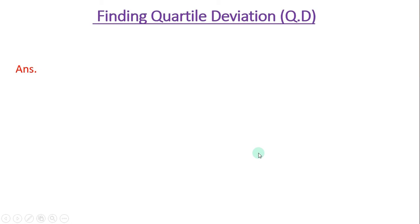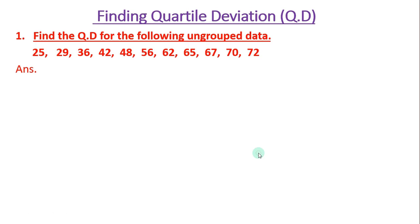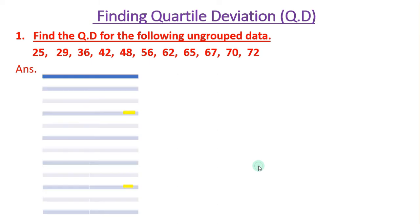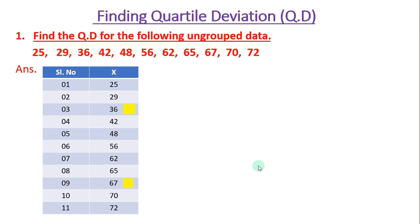Now let us come to the main topic: how to find the quartile deviation. For ungrouped data, the scores given are 25, 29, 36, 42, 48, 66, 62, 65, 67, 70, 72. We have to write them in order in column 1, with serial numbers 1 to 11 — there are 11 scores. X is the score written in order.